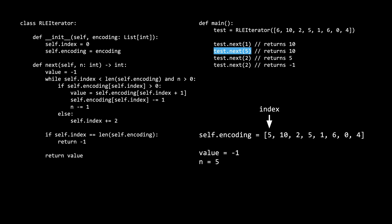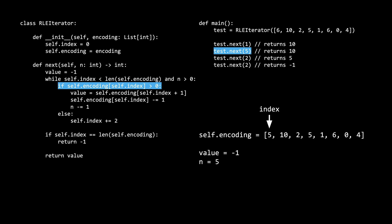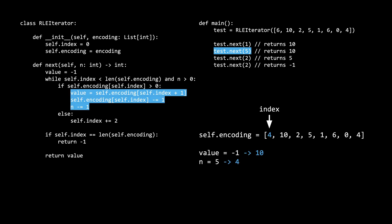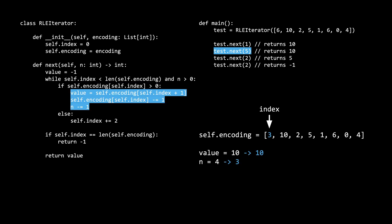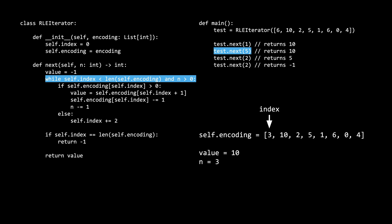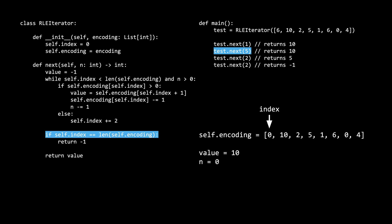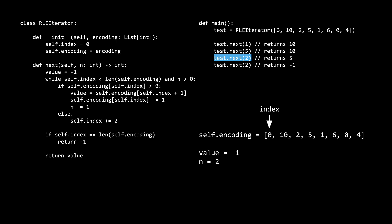For the next call in the main method, we pass in 5 as n. On the first iteration, the while loop passes. The if condition passes because self.encoding of self.index is 5, which is greater than 0. So we enter the if body, set the value variable, and decrement self.encoding of self.index and n. We jump back up to the while condition, which is true, and also the if condition, which is true. This causes us to set the value variable again and decrement. You can see how this while loop runs 3 more times before n is 0 and the while condition fails. We jump down to the if condition, which also fails, so we return the value variable, which is 10.